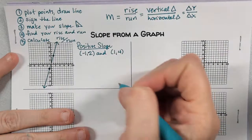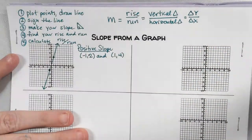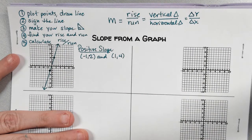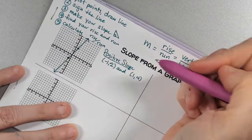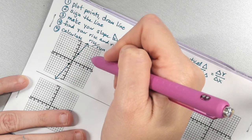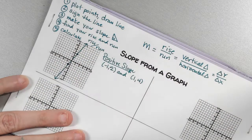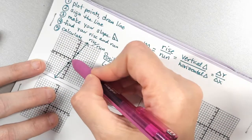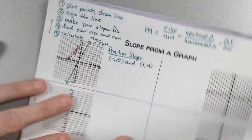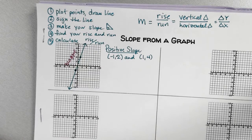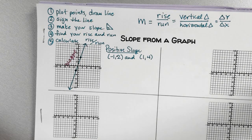Let's do step two: sign the line. When you sign an important document, you sign on the line, right? I sign above the line — I'm going to sign my name a little above the line because I have some other stuff to do here. There's a method to my madness.